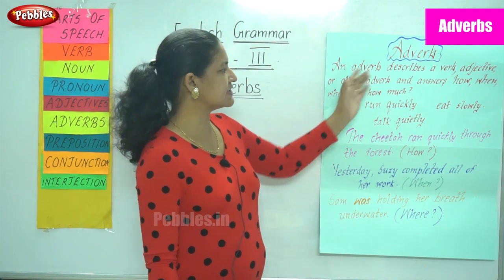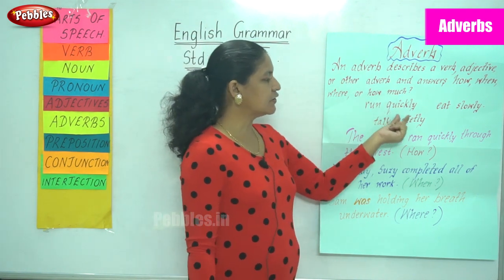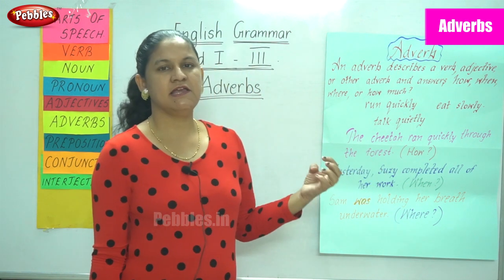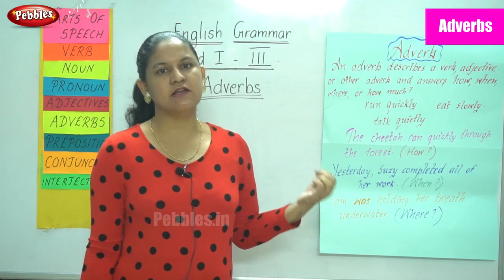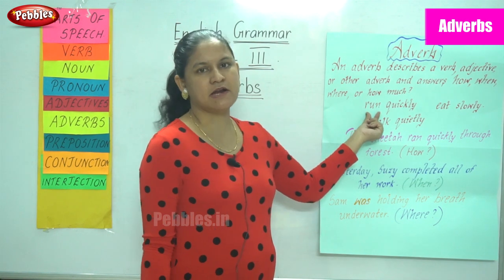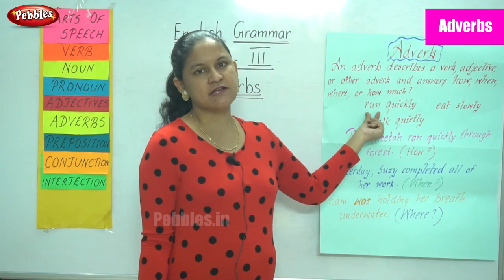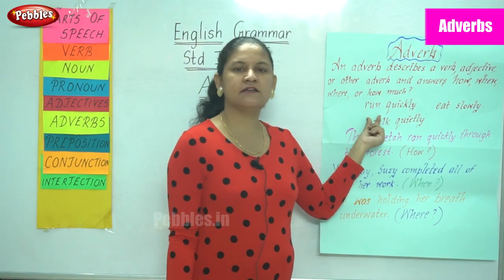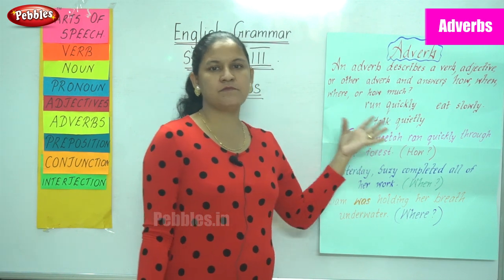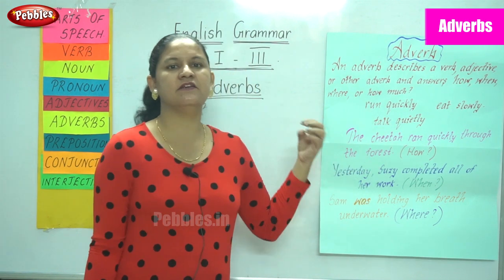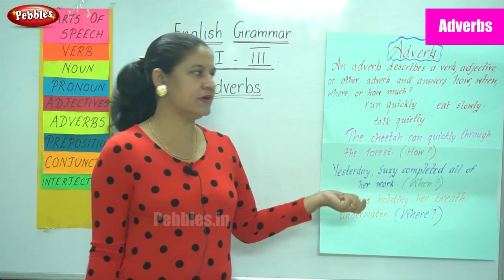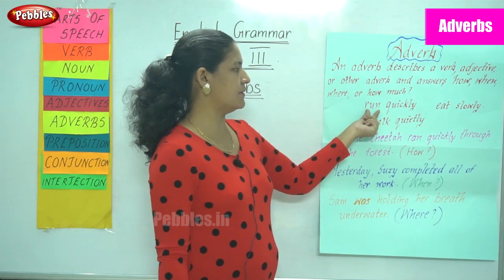Let us see some examples. 'Run quickly.' How should he run? He has to run quickly. So 'quickly' describes the verb 'run.' How did Ram run? Ram ran quickly.